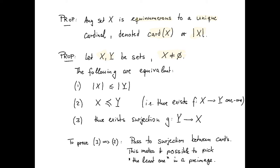So if X and Y are sets, and in particular X is not the empty set, then the following are equivalent: the cardinality of X is less than or equal to the cardinality of Y; there exists an injection from X into Y; or equivalently, and that's the new point really for us, there exists a surjection G from Y into X.